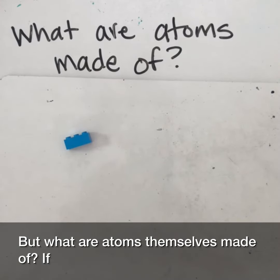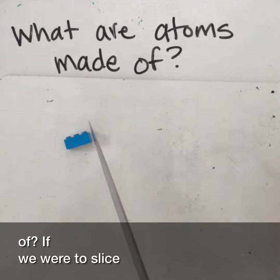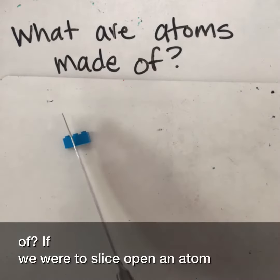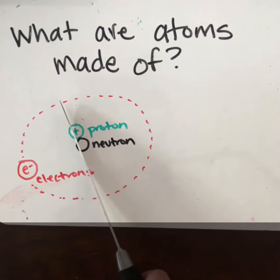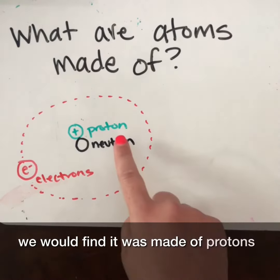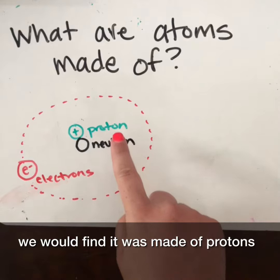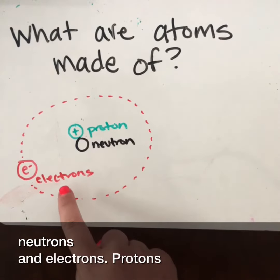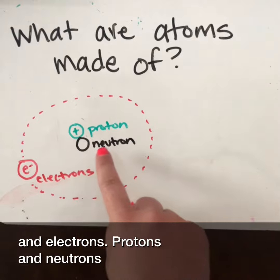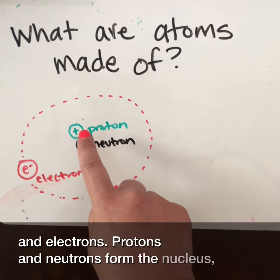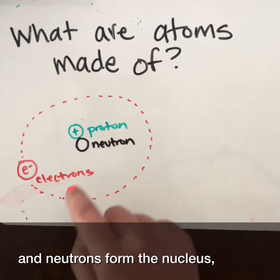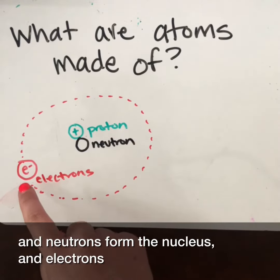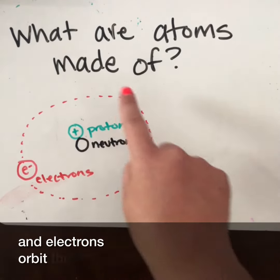If we were to slice open an atom, we would find it was made of protons, neutrons, and electrons. The protons and neutrons form the nucleus, and the electrons orbit the nucleus.